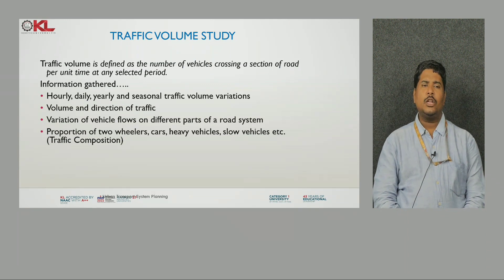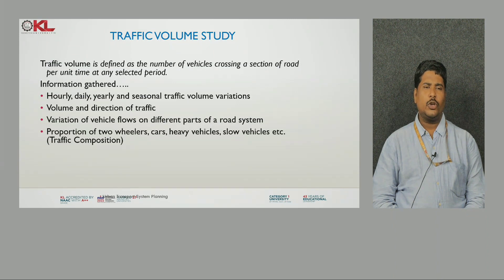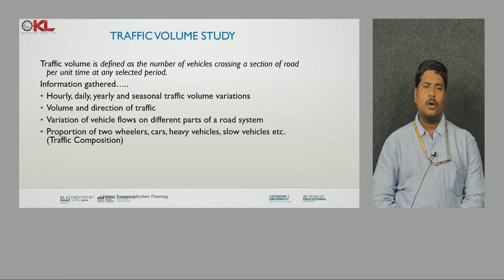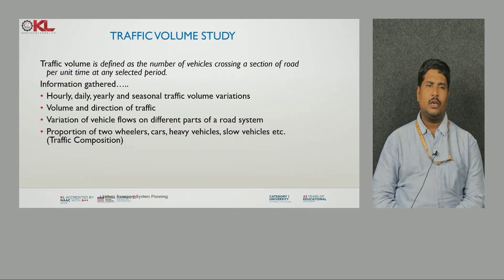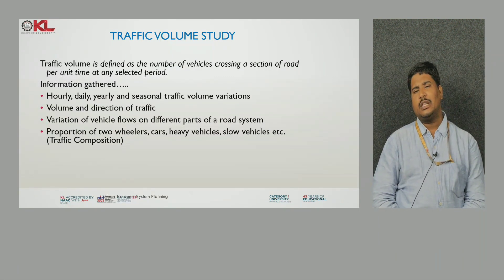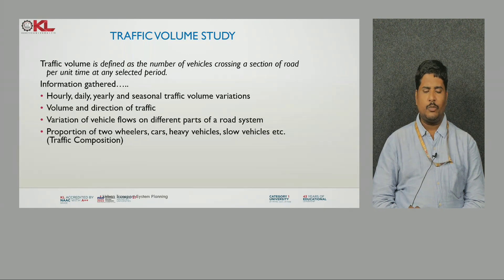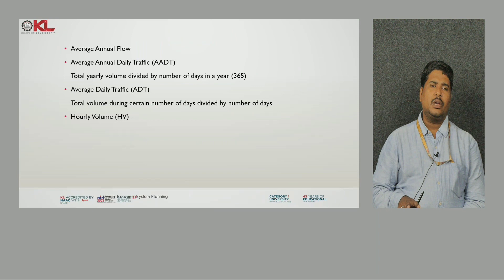Next, volume and direction of traffic — out of the total volume, direction-wise how much volume is going on, in which direction vehicles are moving will be identified. Also, variation of vehicle flows on different parts of a road system will be gathered, and the proportion of two-wheelers, cars, heavy vehicles, slow vehicles, and buses — that is the traffic composition — will be calculated.